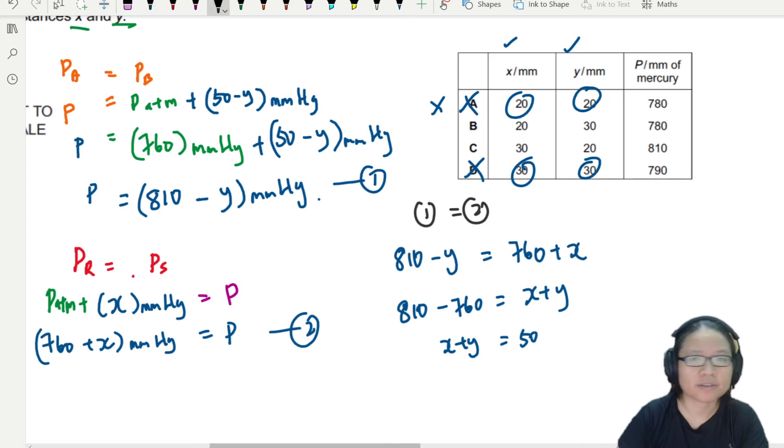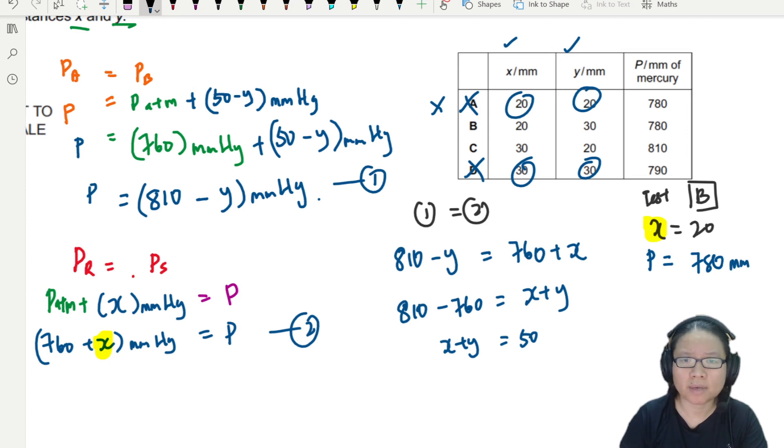I'm going to do option B. We'll test option B. So for option B, X is equal to 20. So if I look at the second equation, I'm going to substitute my X into this X here. So P is equal to 780 mm mercury. Eh, like this, correct. So is the answer B? Yes. Teacher, I don't feel very safe. Can I test C also? Okay, I'll let you test C.